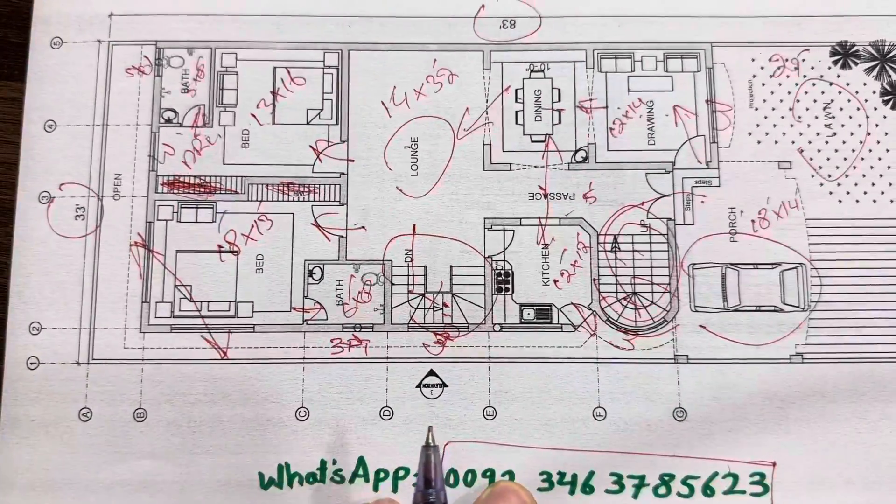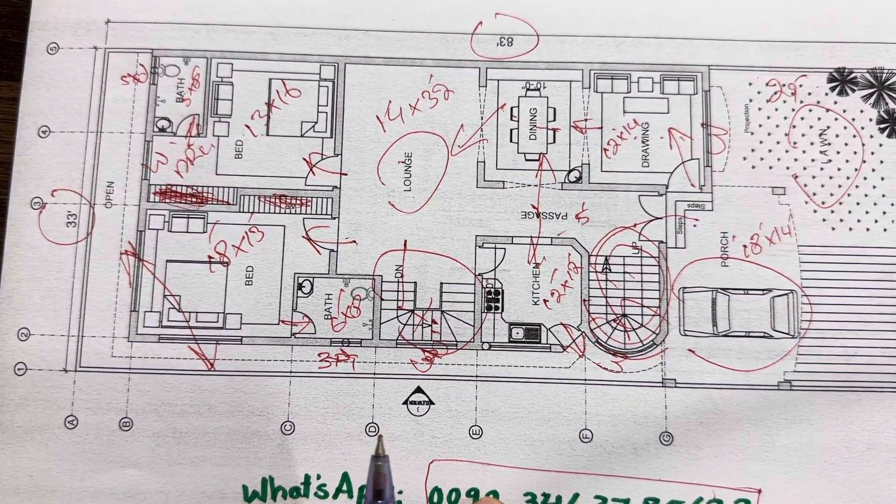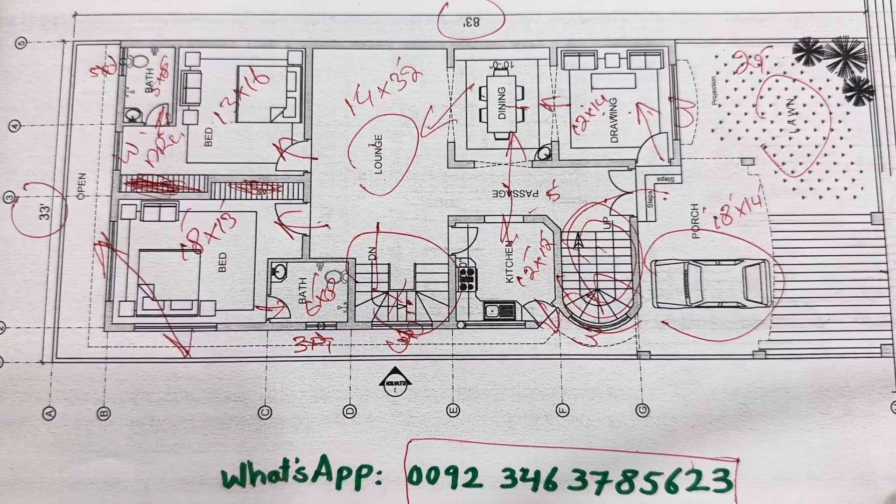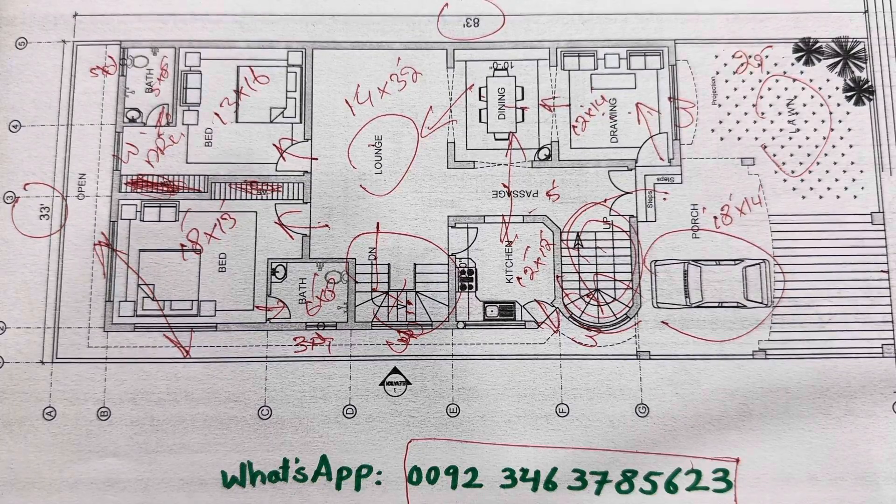So this is a house planning and the dimensions of 33 by 83 feet. Thanks for watching. See you in next video. Goodbye.